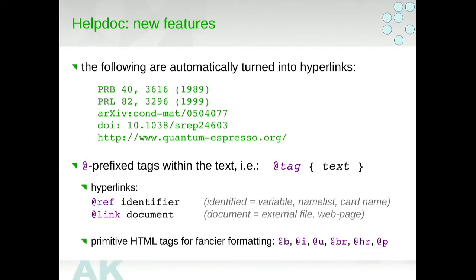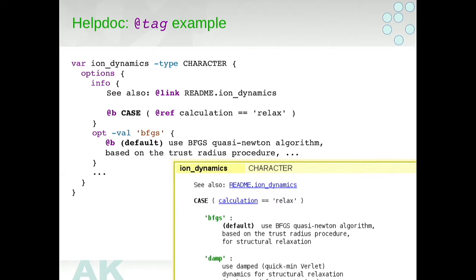In addition to that, in the last year, there were some oot prefix tags that were added. Now one can say something like oot ref an identifier, where identifier is a variable, name list or card name, or link and document, where a document can be external file or some web page. In addition to that, one can also use some primitive HTML tags for fancier formatting. Here is an example. If you say something like this link, then this will turn into the hyperlink. You are referencing the variable, so you can click on this and get the description of what it is. And then, of course, you can also make some words bold.